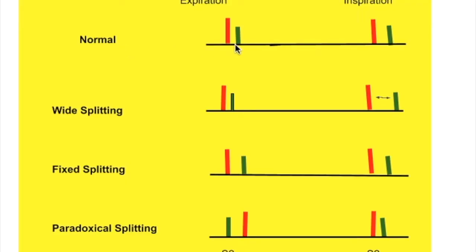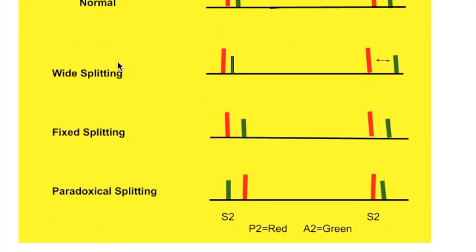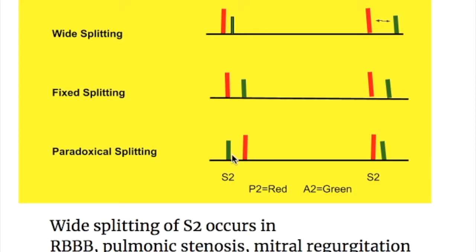In the normal splitting diagram, A2 is marked as a red bar and P2 as a green bar — P2 closing after the aortic valve, with the split being more pronounced during inspiration. In wide splitting, there is an increased gap between the aortic and pulmonary valve closures. In fixed splitting, there is a fixed distance between the two valves during both inspiration and expiration. In paradoxical or reverse splitting, the pulmonary valve closes before the aortic valve, and this occurs in expiration.